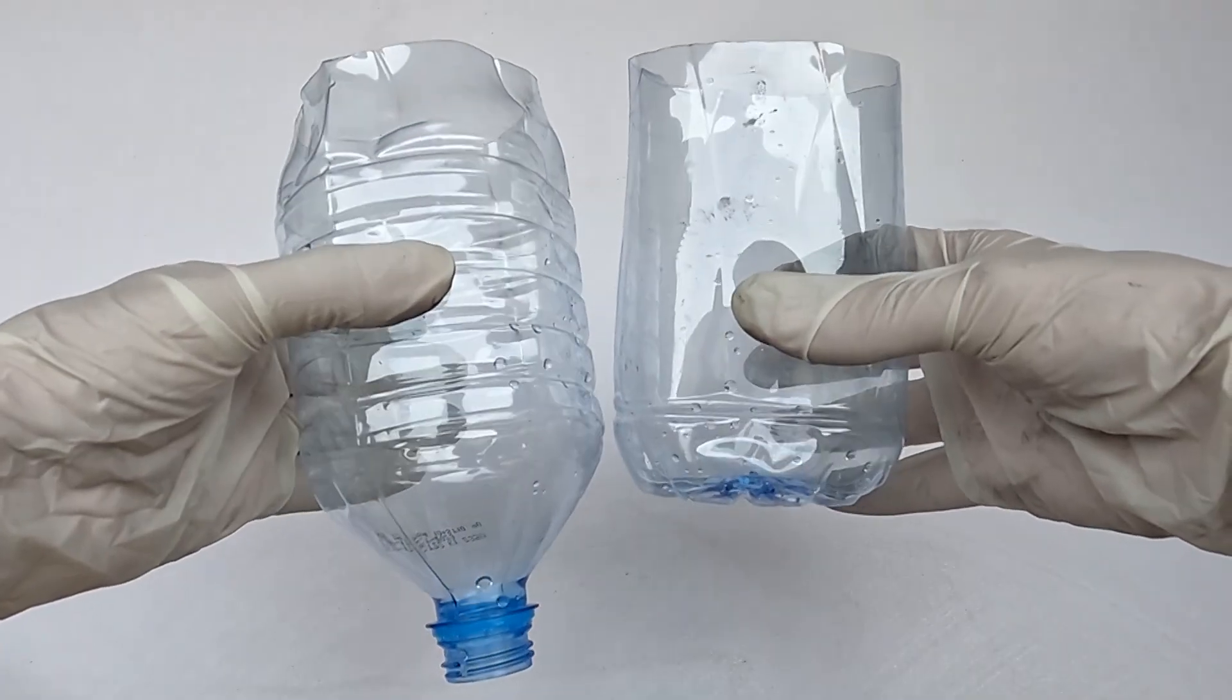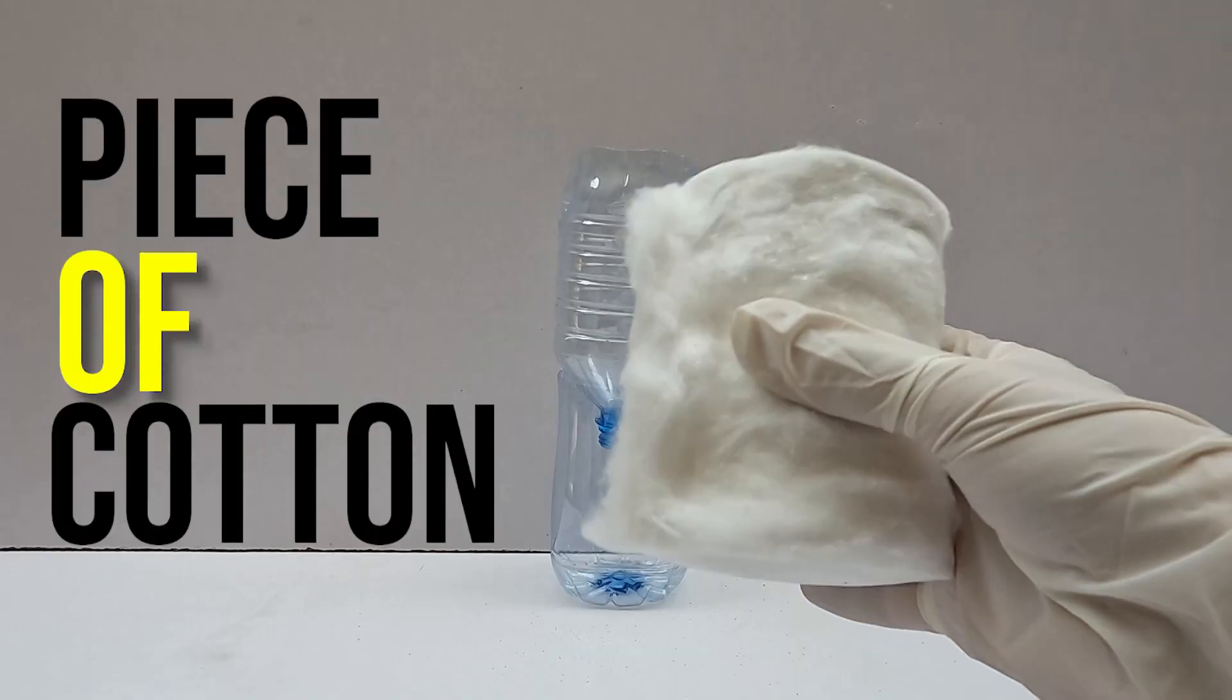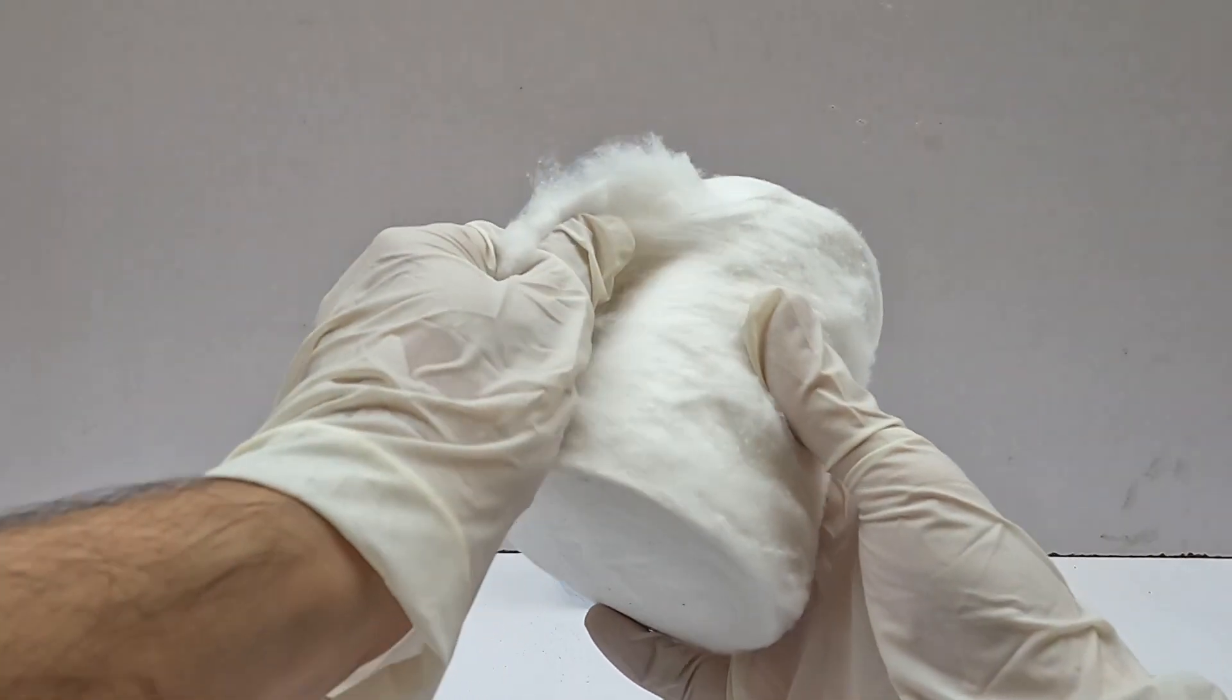For this experiment take the bottle halves, place the bottle upside down in the other half of the bottle. Take a piece of cotton and put the cotton in the bottle first.